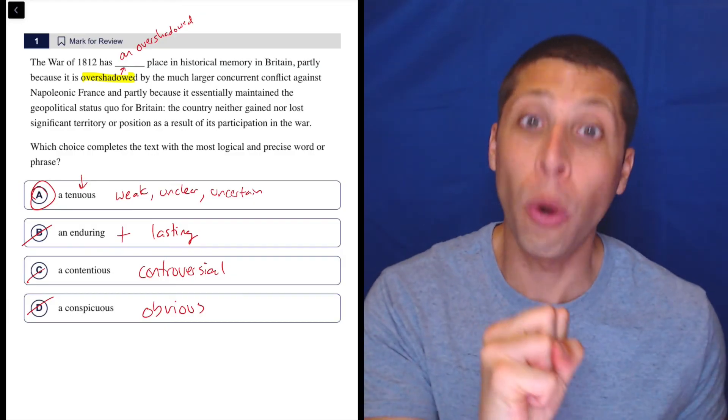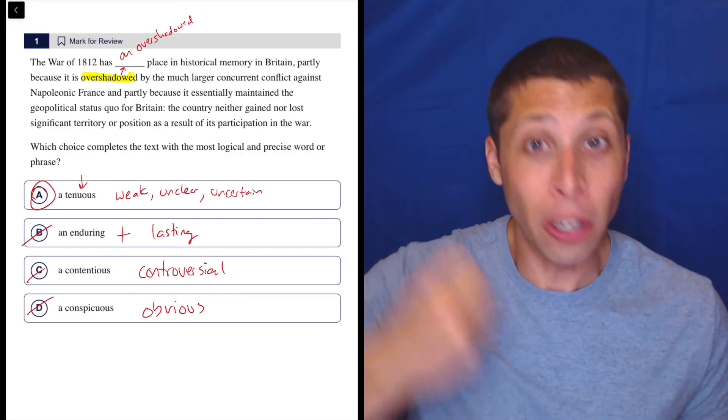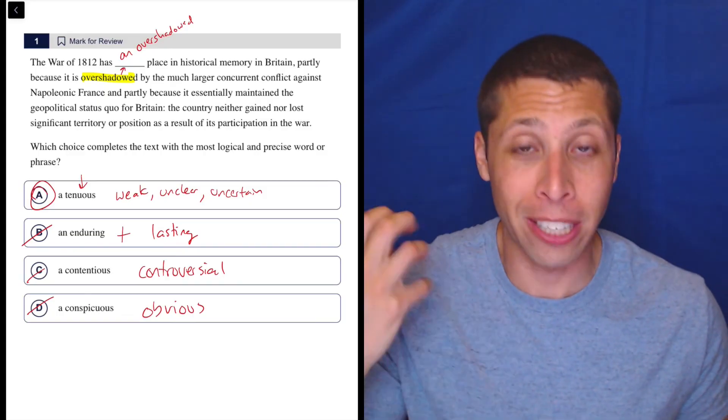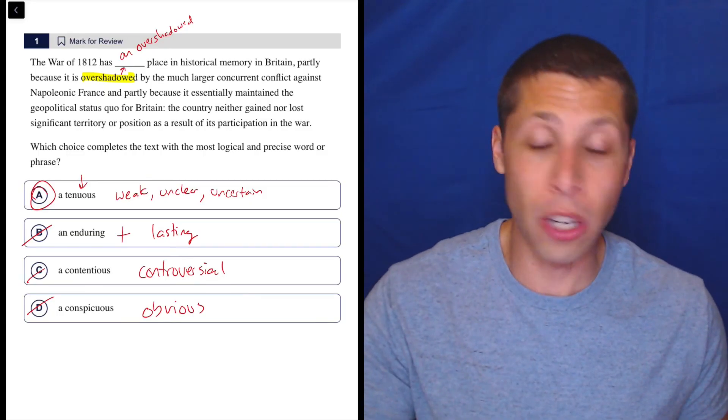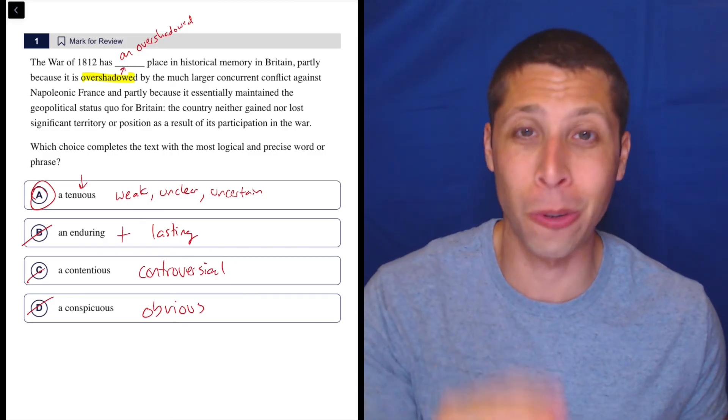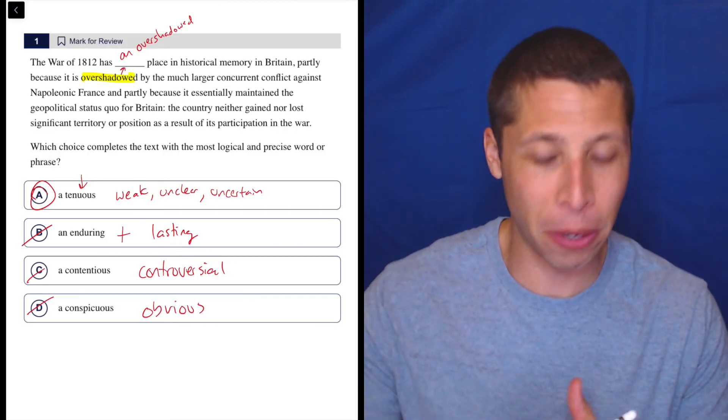It's like if you have a tenuous hold on a rope, you're going to let go of that rope. It's going to fall. You're going to slip down and lose your grip. It's a good word to know. Lots of context where it can work, which is also why we might see it on an SAT. It could appear in lots of situations.